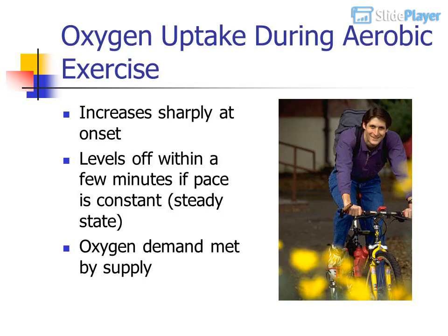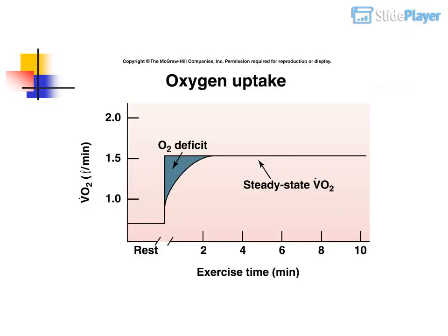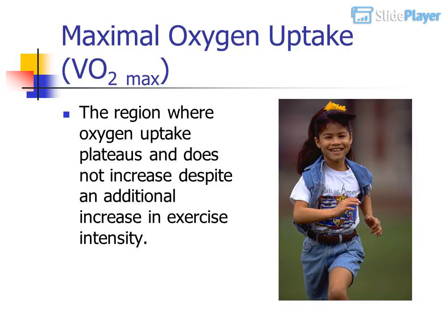Oxygen uptake during aerobic exercise increases sharply at onset, then levels off within a few minutes if pace is constant — this is steady state — meaning oxygen demand is met by supply. Maximum oxygen uptake, or VO2 max, is the region where oxygen uptake plateaus and does not increase despite an additional increase in exercise intensity.